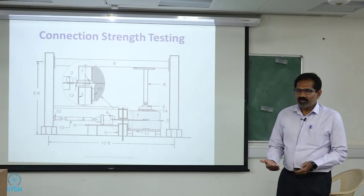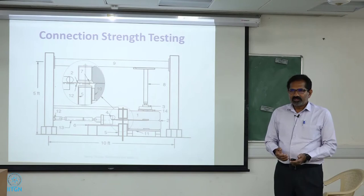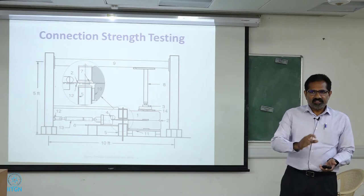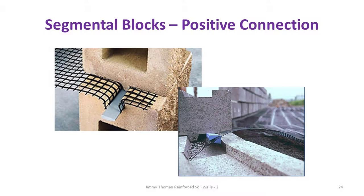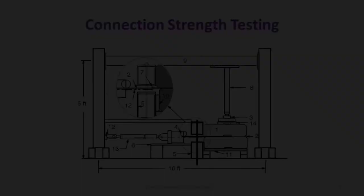Whether it is a positive connection or a frictional connection, ideally we should test it actually. Sometimes what happens is the connector, even if it's a positive connection, the connection fixtures have a limited strength — what is its strength we don't know. And it's not independent of the normal force. For example, if the block was not there it can easily pull out, so this also needs normal force.